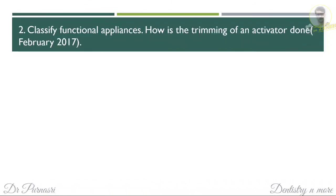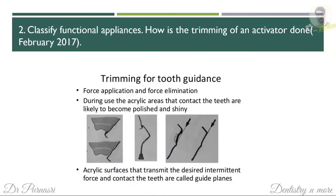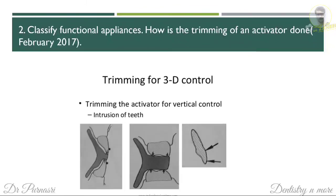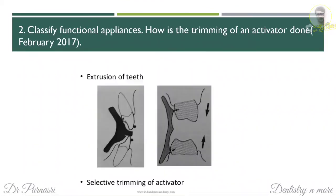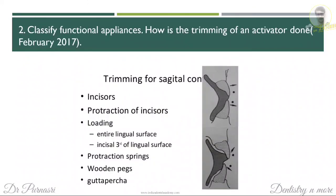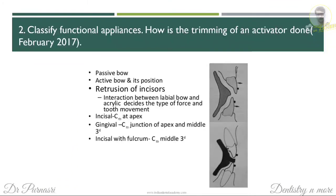The next question is trimming of an activator. There are multiple steps for different types of tooth movement. First, write about trimming of tooth guidance, then trimming for 3D control — diagrams are better here. Then trimming for extrusion of teeth, selective trimming for eruption, and trimming for sagittal control. You can write about how the acrylic should be trimmed, where the bow should be, and the effects on incisors and teeth.